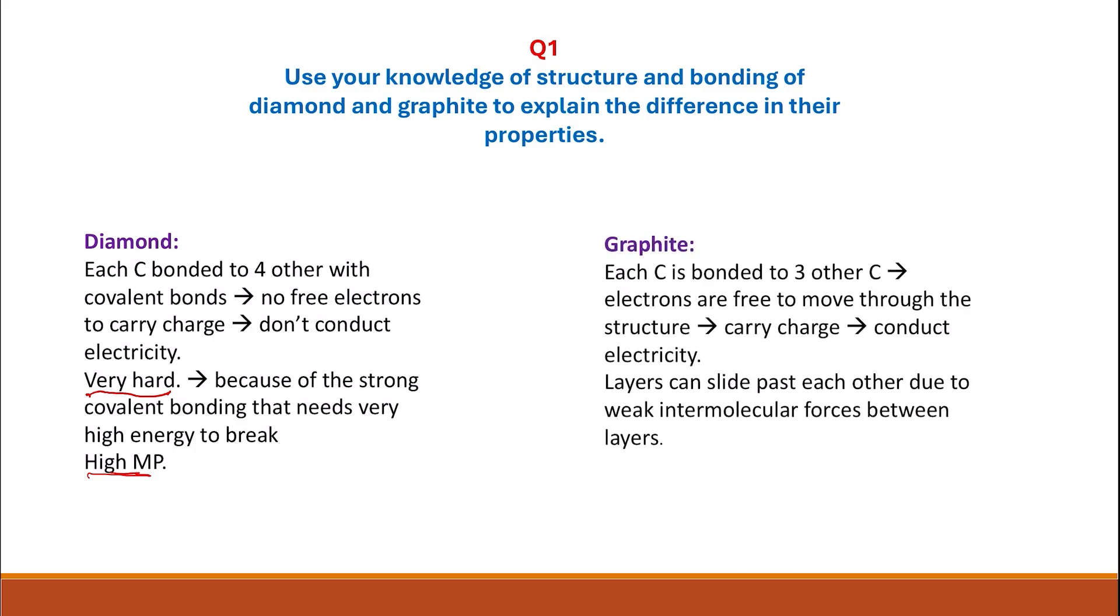As for graphite, each carbon atom is bonded to three other carbons, so there is one free electron from each carbon atom. Electrons are free to move through the structure and can carry charge and conduct electricity. Layers can slide past each other due to weak intermolecular forces of attraction between the layers. They also have high melting point because of the strong covalent bonding.